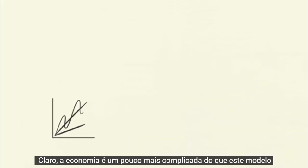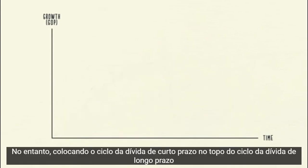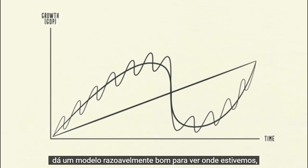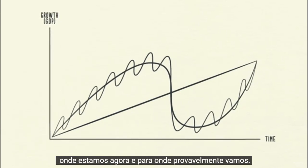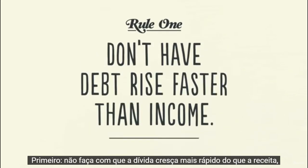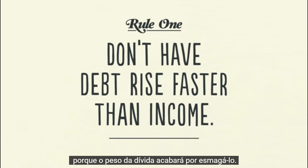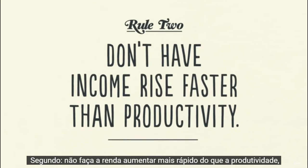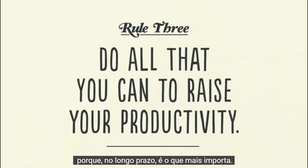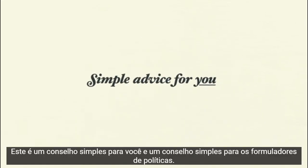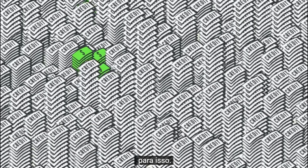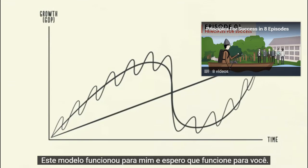In closing, the economy is a little bit more complicated than this template suggests. However, laying the short-term debt cycle on top of the long-term debt cycle and then laying both of them on top of the productivity growth line gives a reasonably good template for seeing where we've been, where we are now, and where we're probably headed. In summary, there are three rules of thumb to take away. First, don't have debt rise faster than income, because your debt burdens will eventually crush you. Second, don't have income rise faster than productivity, because you'll eventually become uncompetitive. And third, do all that you can to raise your productivity, because in the long run that's what matters most. This is simple advice for you and it's simple advice for policy makers. Most people, including most policy makers, don't pay enough attention to this. This template has worked for me and I hope it will work for you. Thank you.